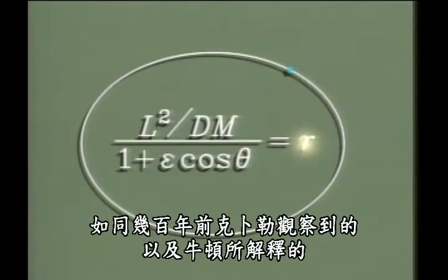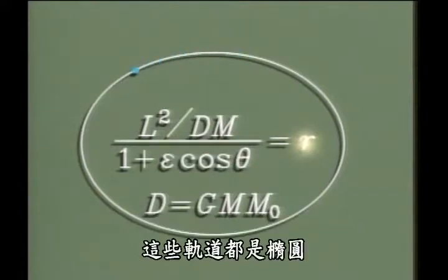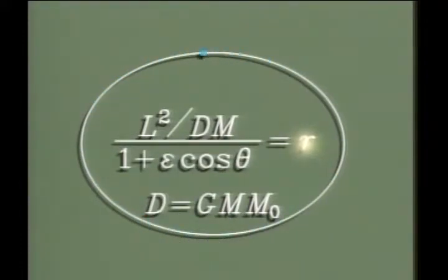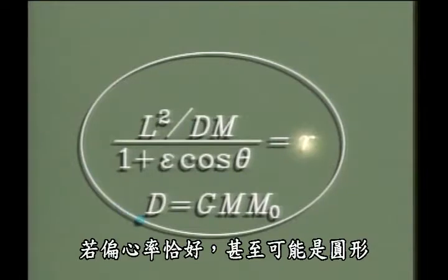As Johannes Kepler had observed, and Isaac Newton had explained centuries earlier, those orbits would be ellipses. Or, depending on their eccentricity, possibly even circles.